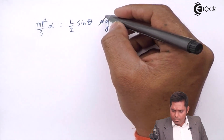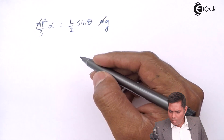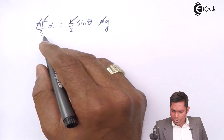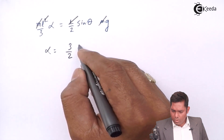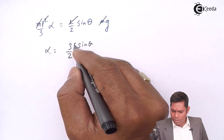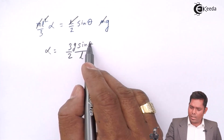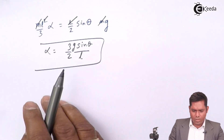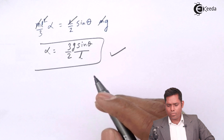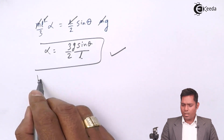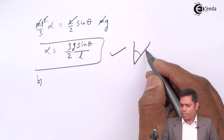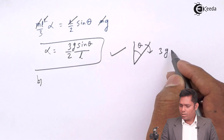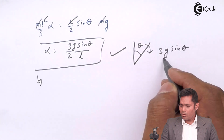Writing out the values: ML²/3 times alpha equals L/2 times sin theta times MG. Cancelling M and one L, we get alpha equals 3G sin theta over 2L. So the answer to the first part: the angular acceleration alpha when the rod makes an angle theta is 3G sin theta over 2L.